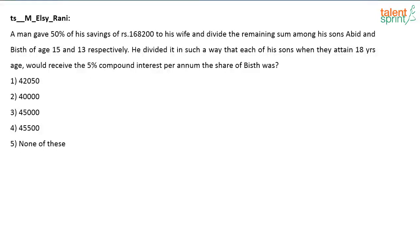This question is posted by LC. A man gave 50% of his savings of rupees 168,200 to his wife and divided the remaining sum among his sons Abid and Bist, of ages 15 and 13 respectively. He divided it such that each son, when they attain 18 years of age, would receive at 5% compound interest per annum. The man gave 50% — that is half — to his wife, and the remaining 50% to his two sons.